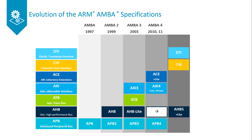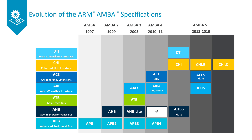In 2014, the AMBA 5 CHI coherent hub interface specification was introduced, with a redesigned high-speed transport layer and features designed to reduce congestion. There have been several additions to the CHI protocol, with each new version adding new features. In 2016, the AHB protocol was updated to AHB5, which complements the ARMv8-M architecture to extend the TrustZone security foundation from the processor to the system.